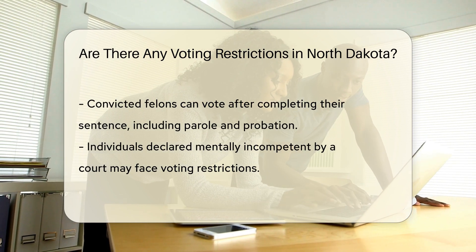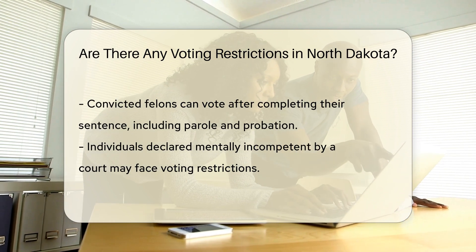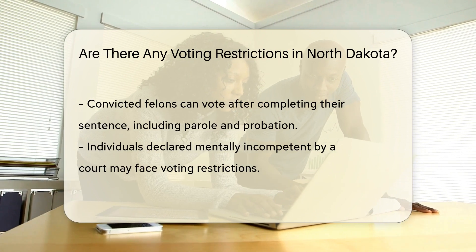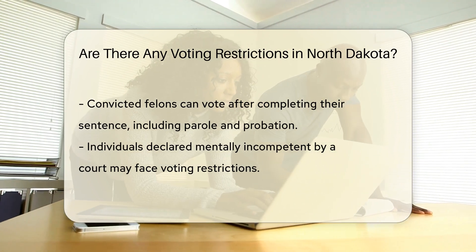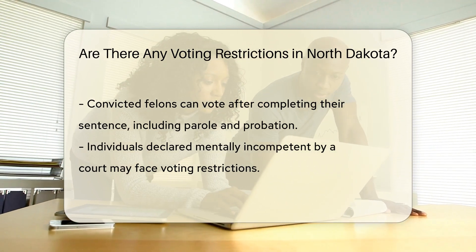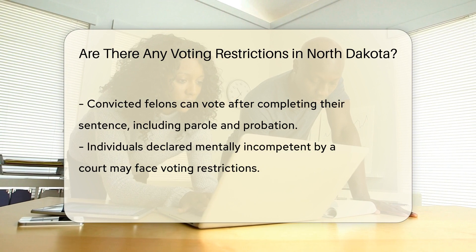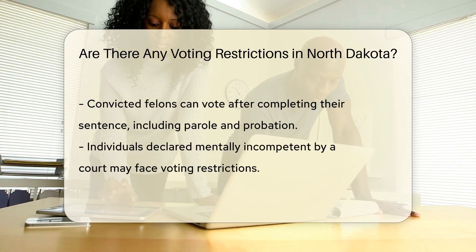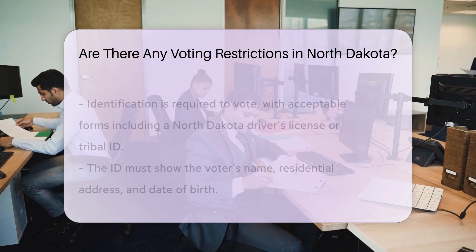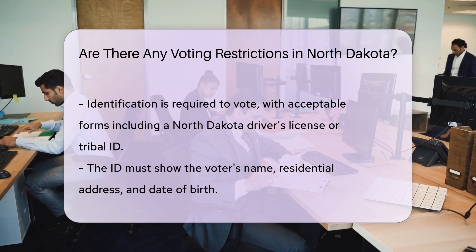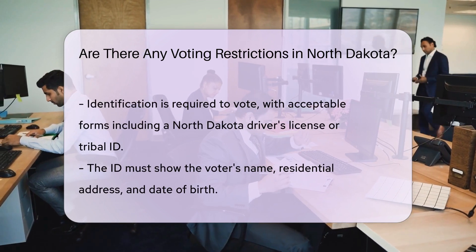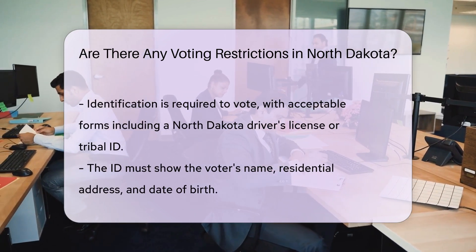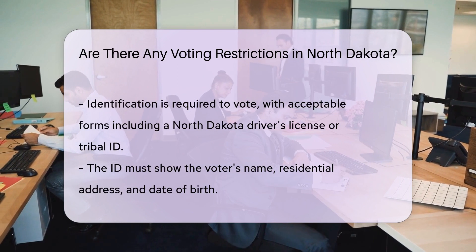There are restrictions for certain groups of individuals. Convicted felons may vote only after they have served their sentence, including parole and probation. This reinstatement of voting rights is automatic upon completion of the sentence. Another group facing restrictions includes individuals declared mentally incompetent by a court. Their right to vote is contingent upon the specifics of the court's decision.